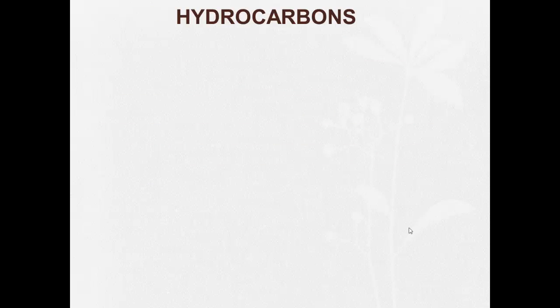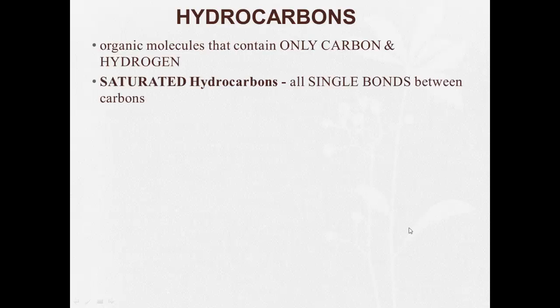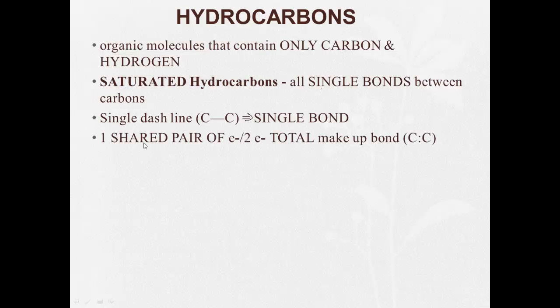Hydrocarbons. Hydrocarbons are organic molecules containing carbon and hydrogen. Now saturated hydrocarbons have all single bonds between carbons. Remember, a single dashed line is a single bond, which has one shared pair or two electrons total, making up that single bond. So C, like so, if it's a Lewis structure, I replace the shared pair with a line. And here's an example of a saturated hydrocarbon. They are all single bonds.